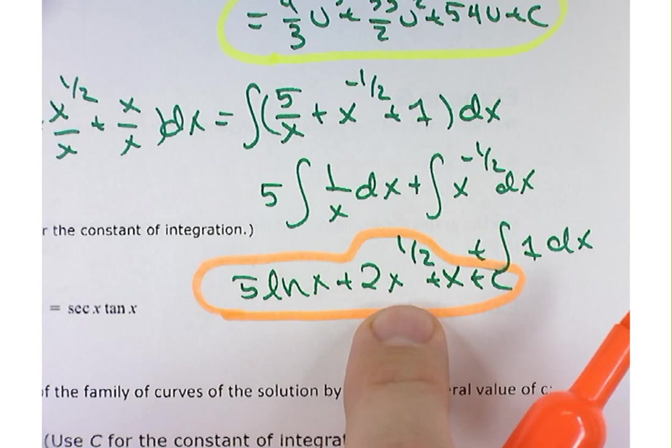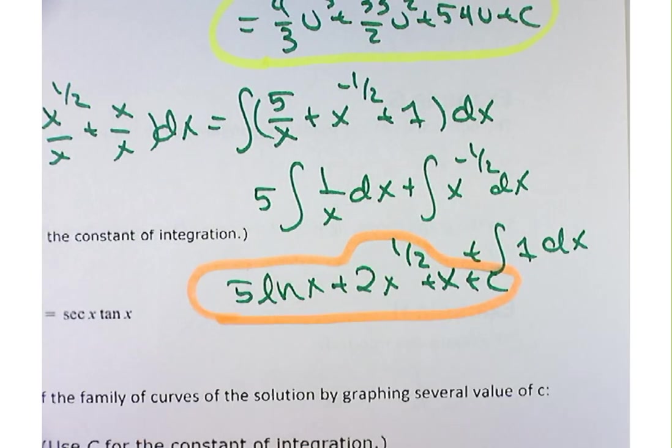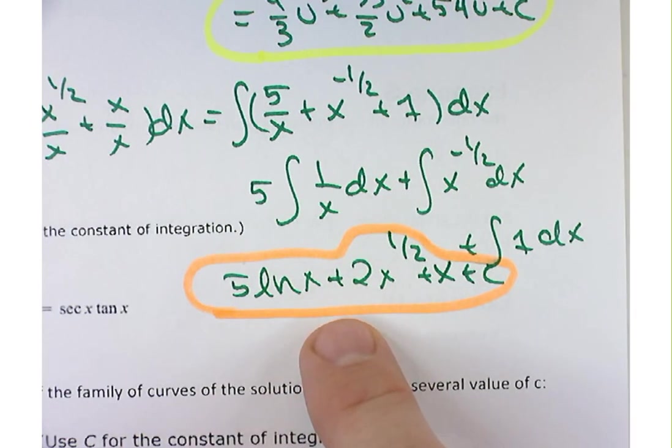If you want to write it as 2 times the square root of x or 2x to the 1 half, it really doesn't make much difference to me. Most textbooks you'll see are going to write it like 2 times the square root of x. But that's fine. Square root of x and x to the 1 half are identical.